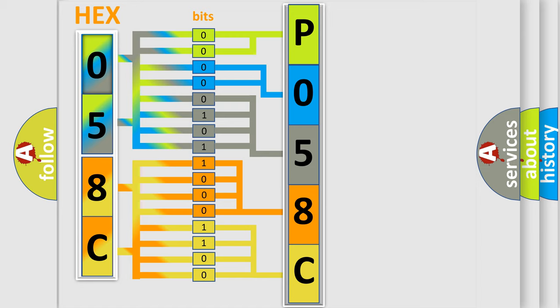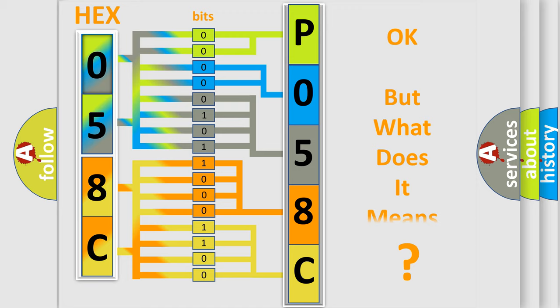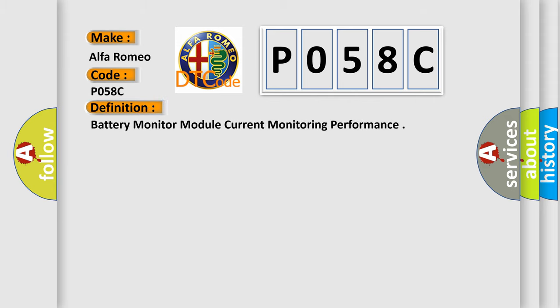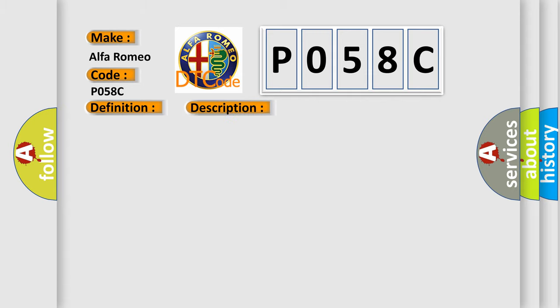We now know in what way the diagnostic tool translates the received information into a more comprehensible format. The number itself does not make sense if we cannot assign information about what it actually expresses. So, what does the Diagnostic Trouble Code P058C interpret specifically for Alfa Romeo car manufacturers? The basic definition is Battery Monitor Module Current Monitoring Performance. The IBS is reporting an irrational temperature value during any of the transition periods.